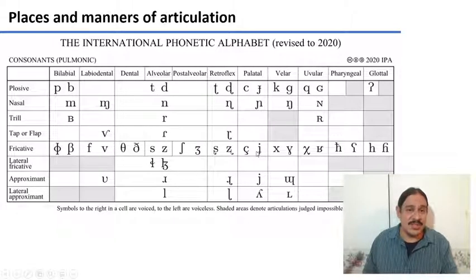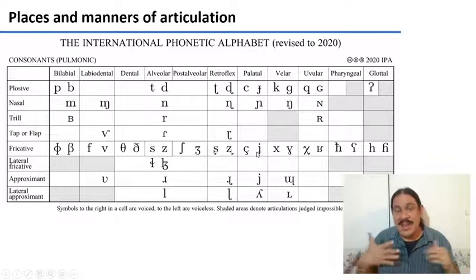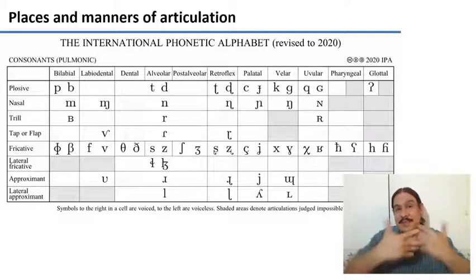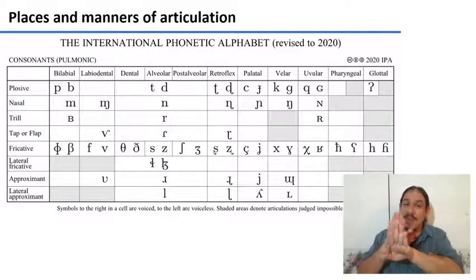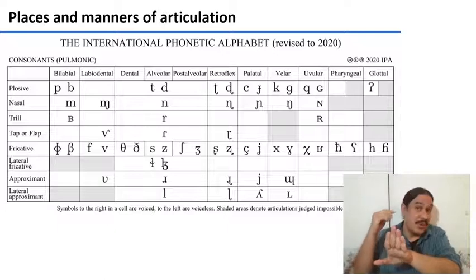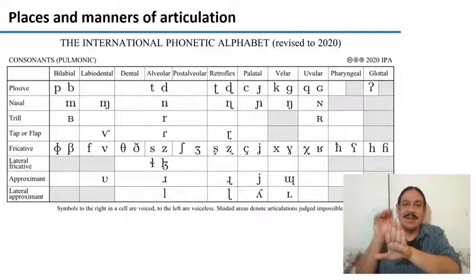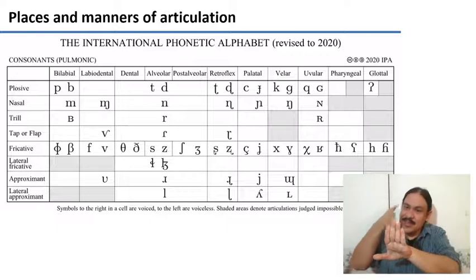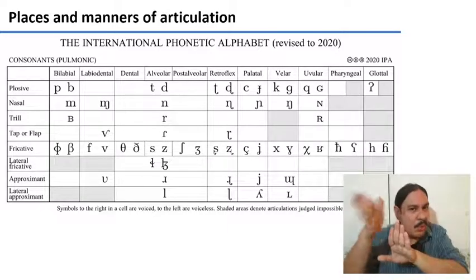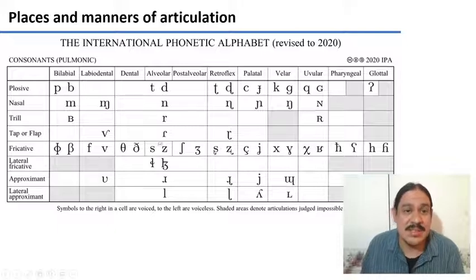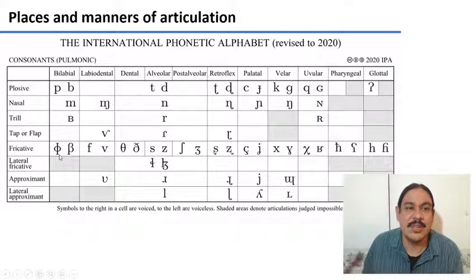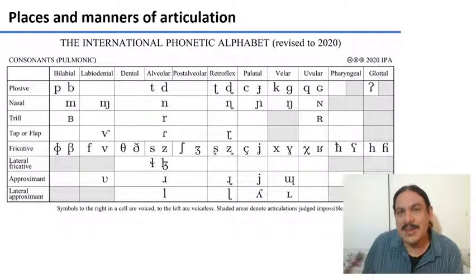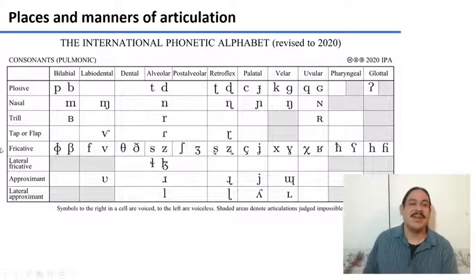We also looked at fricative consonants. Fricatives have a partial release of air. There's something like your tongue, for example, which is in the way of the air flow, cutting through it and causing turbulence. Fricative consonants come out sounding like noise because of that turbulence. Sometimes it's your tongue and sometimes it's your lips — this is a sound from Japanese which is the friction between two lips: phu.